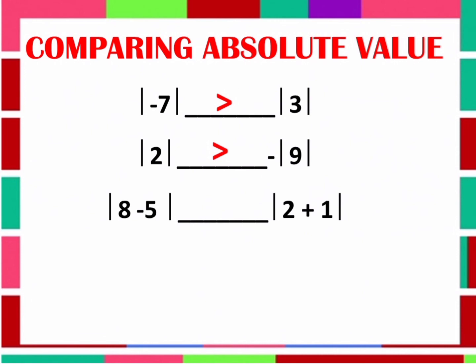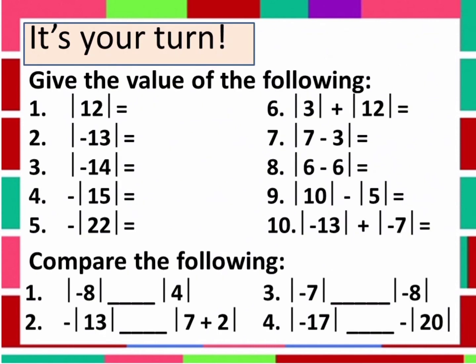Next example: the Absolute Value of 8 minus 5 compared to the Absolute Value of 2 plus 3. Simplify inside first: 8 minus 5 is 3, and 2 plus 3 is 3. Therefore, the Absolute Value of 8 minus 5 is equal to the Absolute Value of 2 plus 3. Another example: the Absolute Value of 13 minus 9 compared to the Absolute Value of 14. Performing the operation inside: 13 minus 9 is 4, and the Absolute Value of 14 is 14. Therefore, the Absolute Value of 13 minus 9 is less than the Absolute Value of 14.